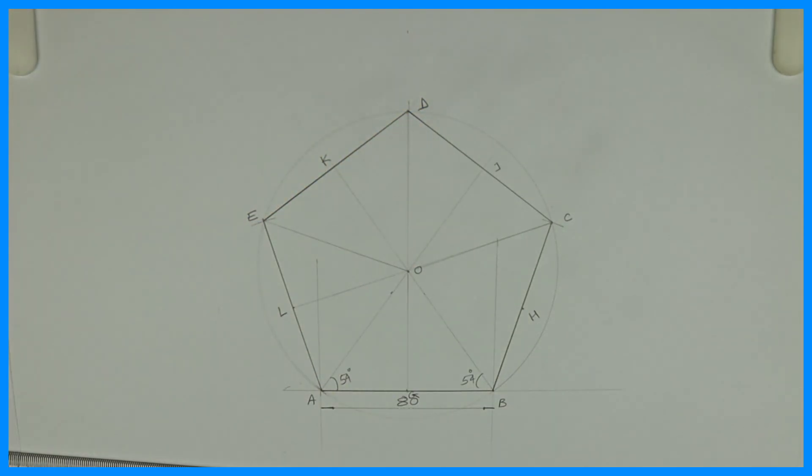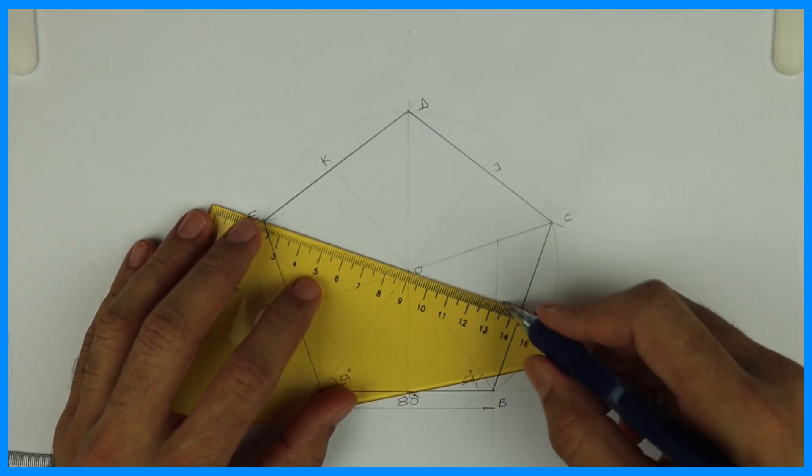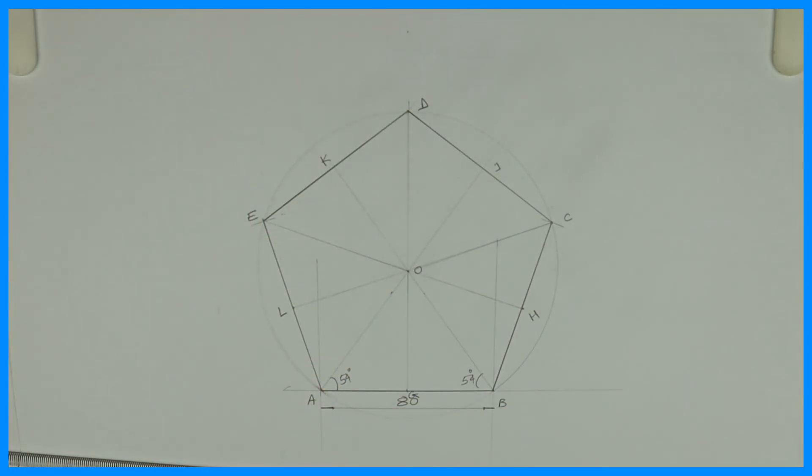Now what we need to do: we'll join this also. Now we need to draw circle in this.